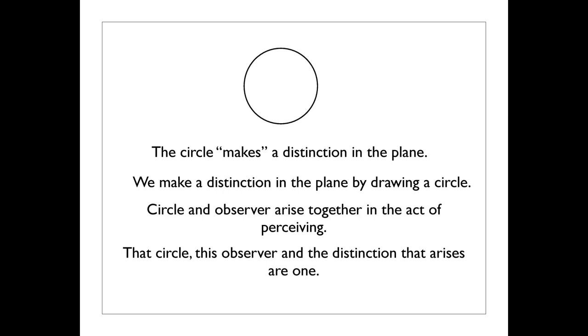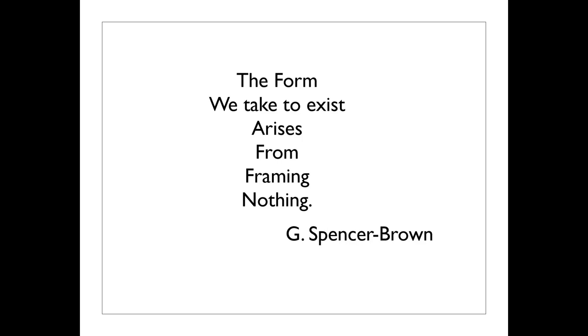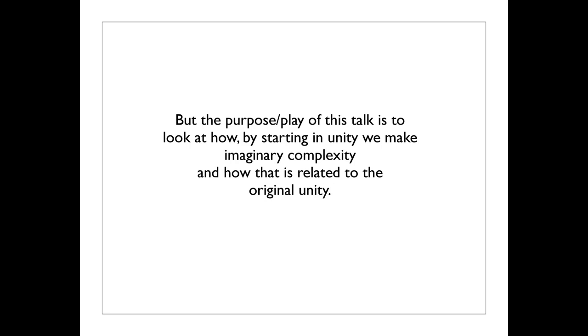And I put makes in quotes because it doesn't make the distinction. You make the distinction. We make a distinction in the plane by drawing a circle. The circle and the observer arise together in the act of perceiving the circle. And in that sense, that circle, this observer, and the distinction that arises are one. This is a kind of R1, which is like the center core line in the Mobius band is one, and yet it is two if you perturb it a little bit. It is the one of connection. And another thing that Spencer Brown wrote in his book is, the form we take to exist arises from framing nothing.